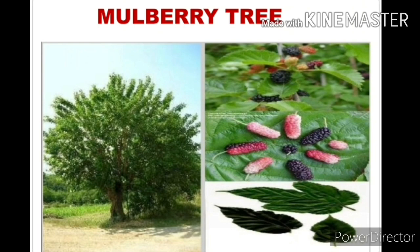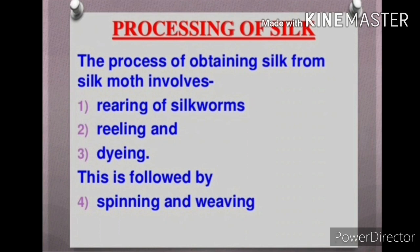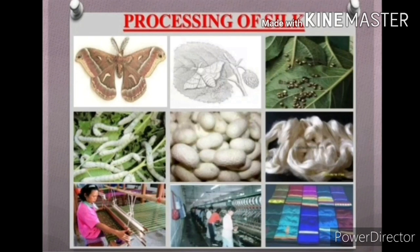This is a tree of mulberry. This figure shows the life cycle of the silkworm. Processing of silk involves the following steps: rearing of silkworm, reeling, dyeing, and this is followed by spinning and weaving. In this figure you can easily see the steps of how silk is formed.